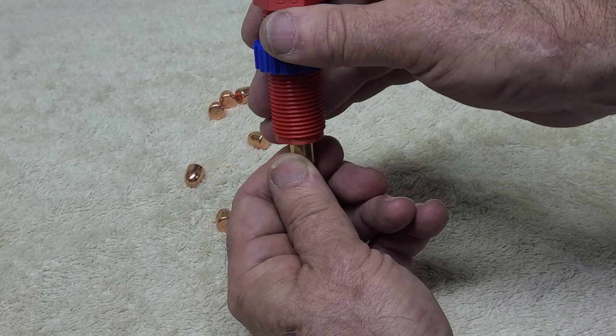357 and 38 use longer bullets, so you'd use the 38 setting. Nine millimeters are a little bit longer than the 380s, so you use a 9 millimeter setting. That's it in a nutshell. Thanks for watching, good luck.